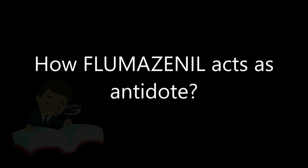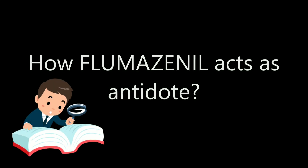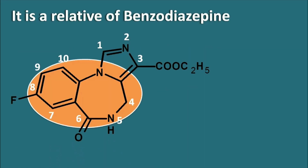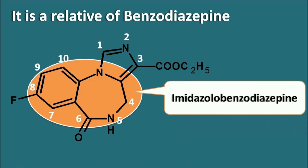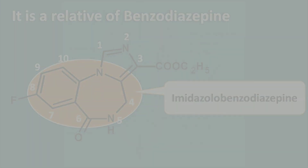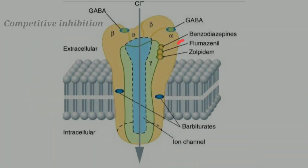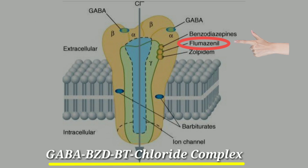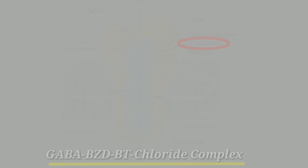How does it act as an antidote? Flumazenil is an imidazobenzodiazepine derivative, hence it has a similar structure. It competitively inhibits the activity at the benzodiazepine recognition site on the GABA or benzodiazepine receptor complex.